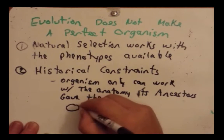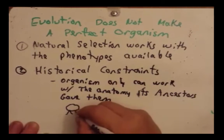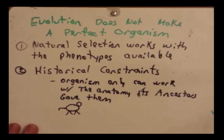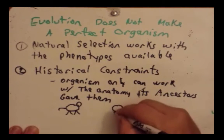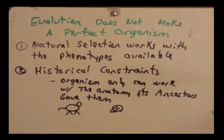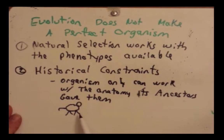If some land animal with legs was going to give rise to a bird, it's not going to magically keep the legs and form new wings from scratch. It can't erase the anatomy of the legs — that's not how it works. What has to happen is that it must work with what it has.